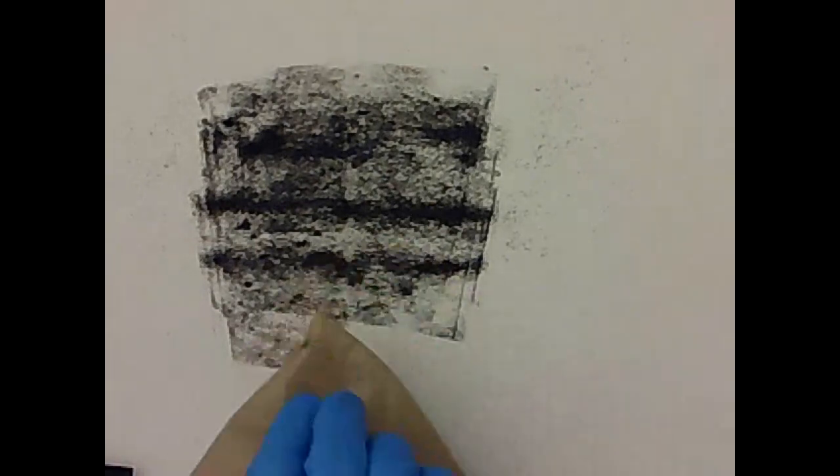Along with it is the next homework, which allows you to practice what we call the subtractive technique. So what I'm doing right now is just putting a layer of charcoal on my paper, and I'm blending it out, kind of smoothing it in.